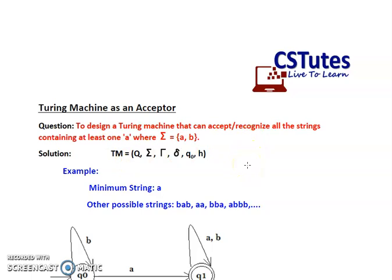A Turing machine is represented using six tuples. Capital Q is a set of states. Σ is the set of finite input symbols present on the infinite tape, excluding the blank symbol hash. Γ is the set of symbols on the infinite tape including the blank symbol hash. δ is the transition function, which can be represented as a transition graph, a transition function, or a transition table. Q0 is the initial state and H is the halt state.